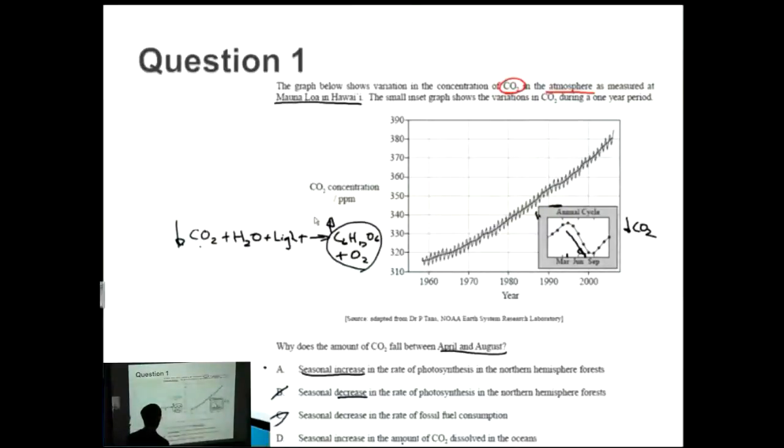Finally, D: a seasonal increase in the amount of CO2 dissolved in the oceans. That one seems a bit like a red herring answer. It would make sense if you had carbon dioxide being dissolved in the oceans, then the amount in the atmosphere would decrease. However, it just doesn't seem to add up to me. So I believe the answer would be A, and that indeed is the correct answer.